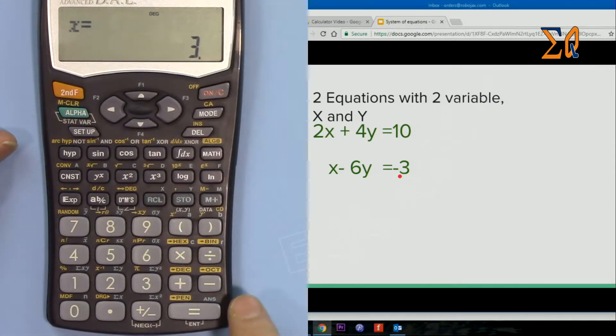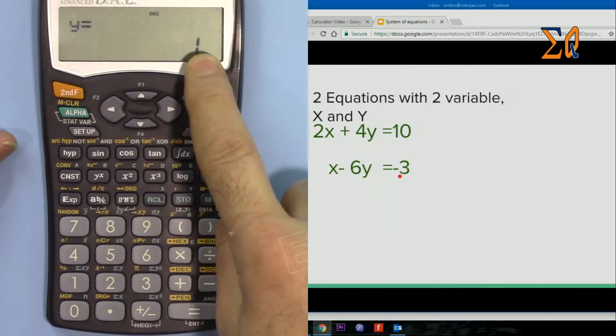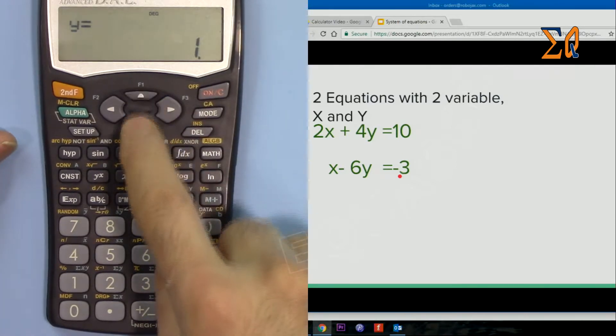And then minus 3, press equal and then the answer is X is 3 and then Y is 1. Unfortunately I cannot scroll. In Casio you could do that.